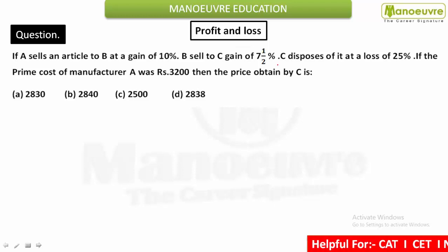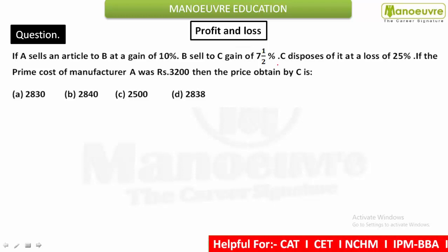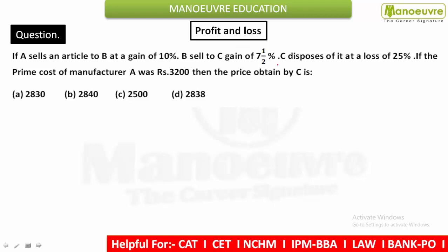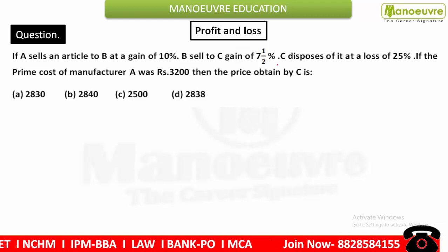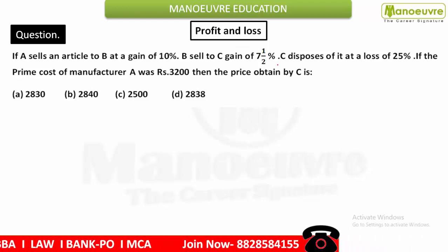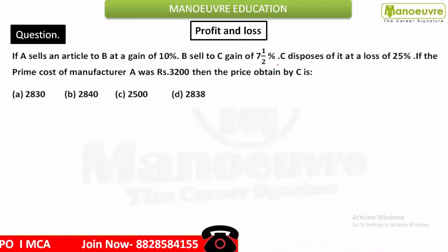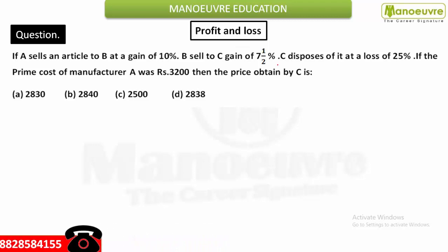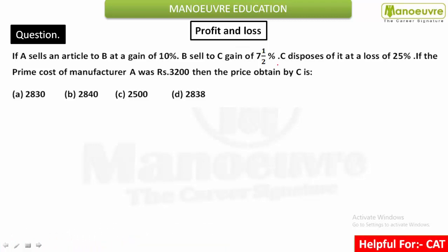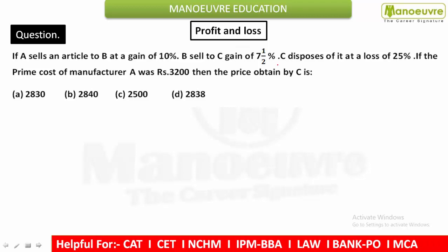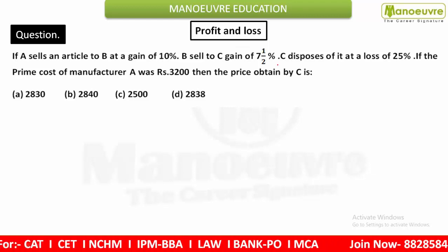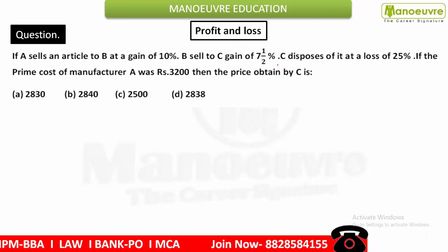Hey guys, welcome to Manoeuvre. Today we are going to see a question from the chapter Profit and Loss. If A sells an article to B at a gain of 10%, B sells to C at a gain of 7½%, and C disposes of it at a loss of 25%. If the prime cost of the manufacturer A was Rs. 3200, then find the price obtained by C.